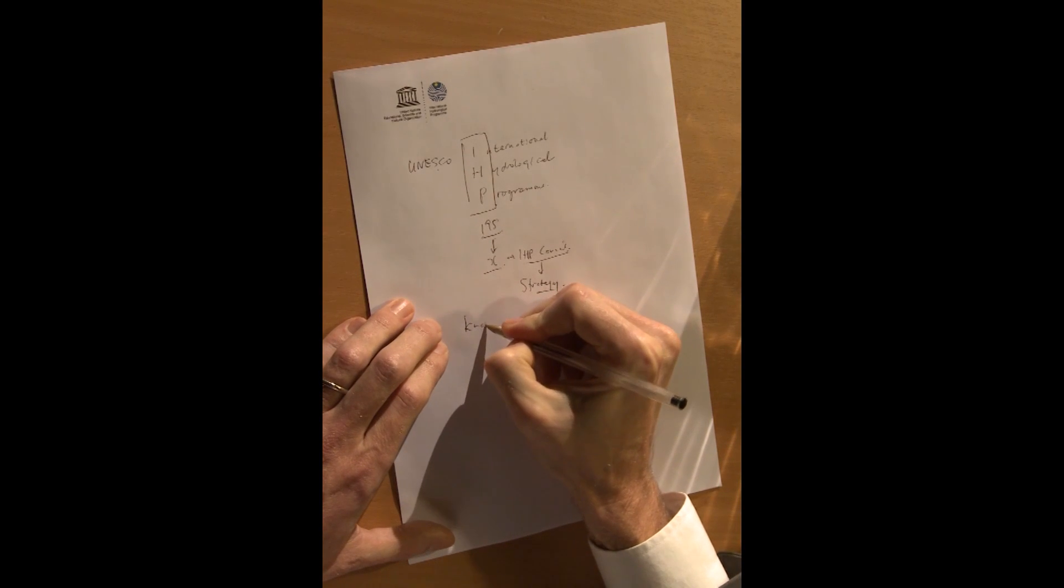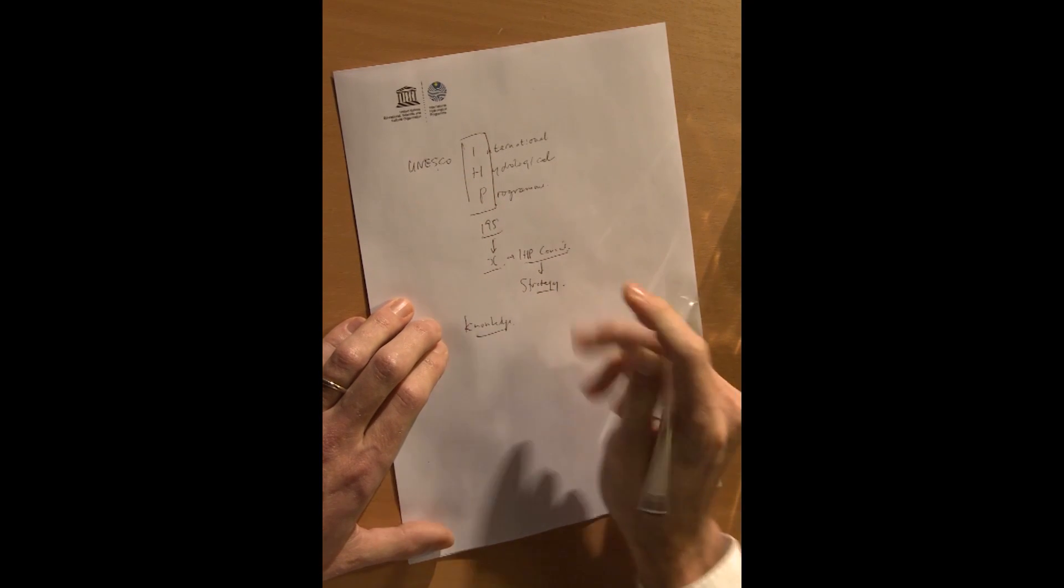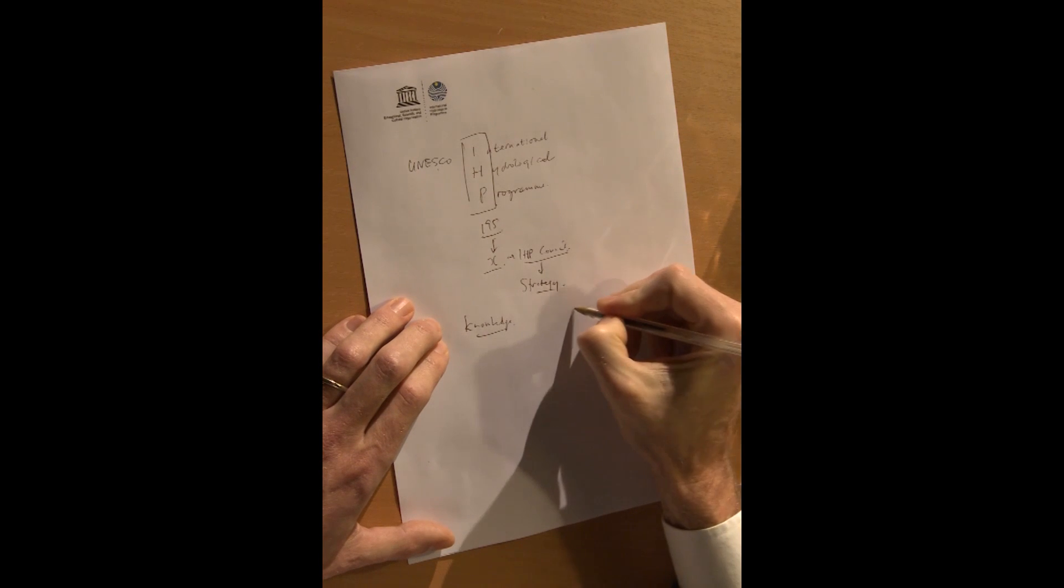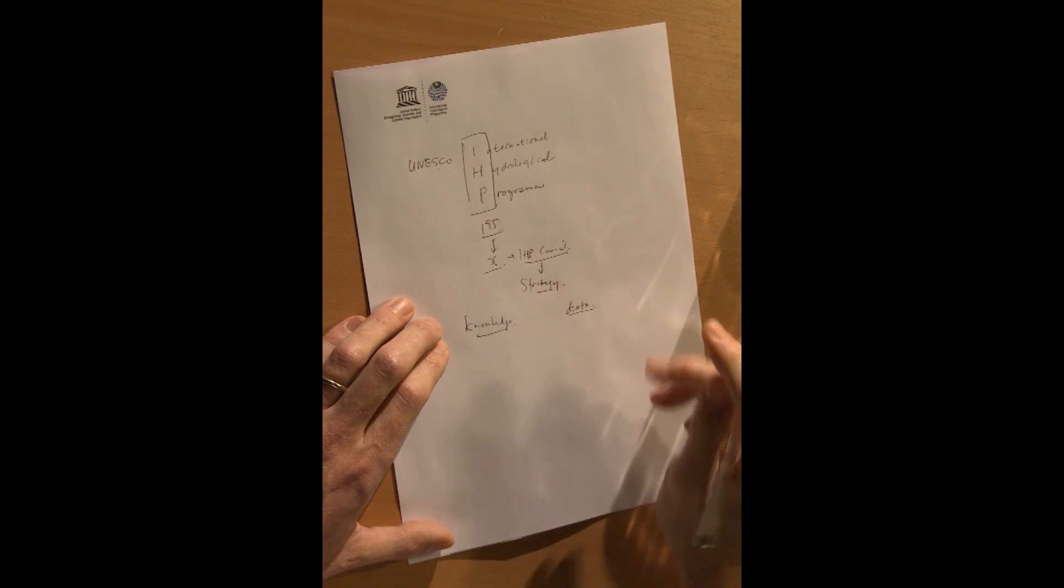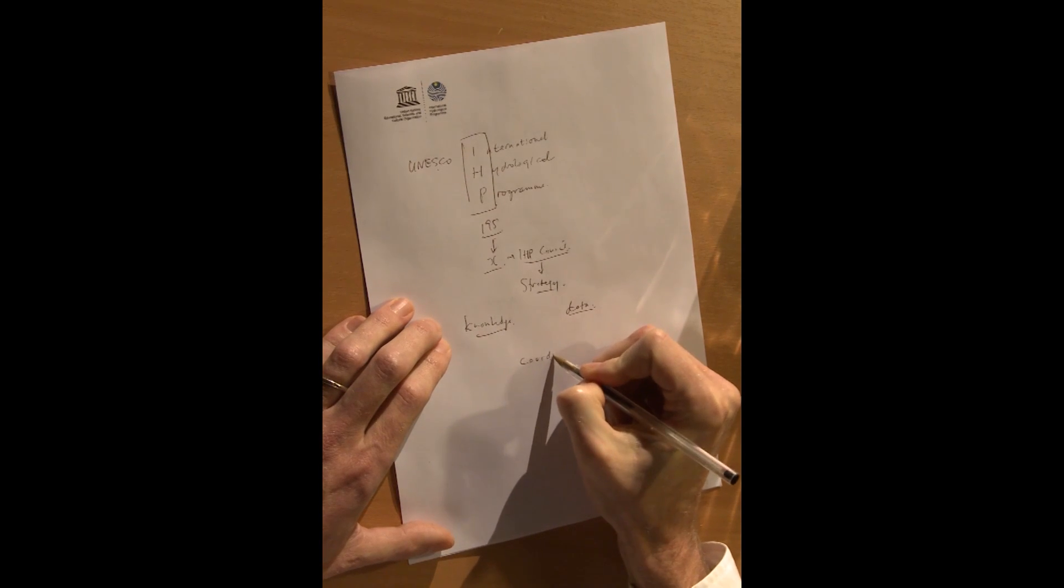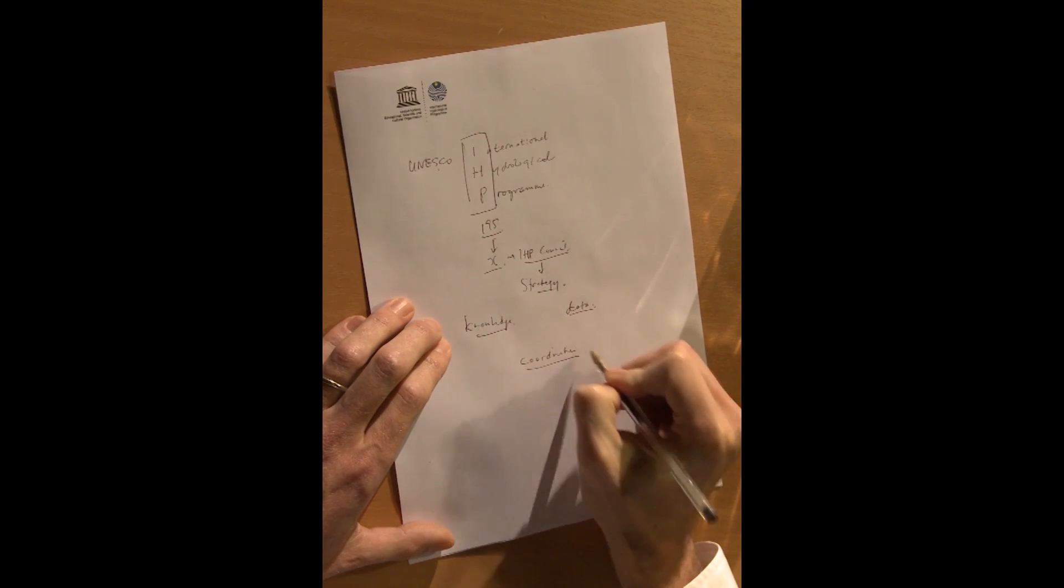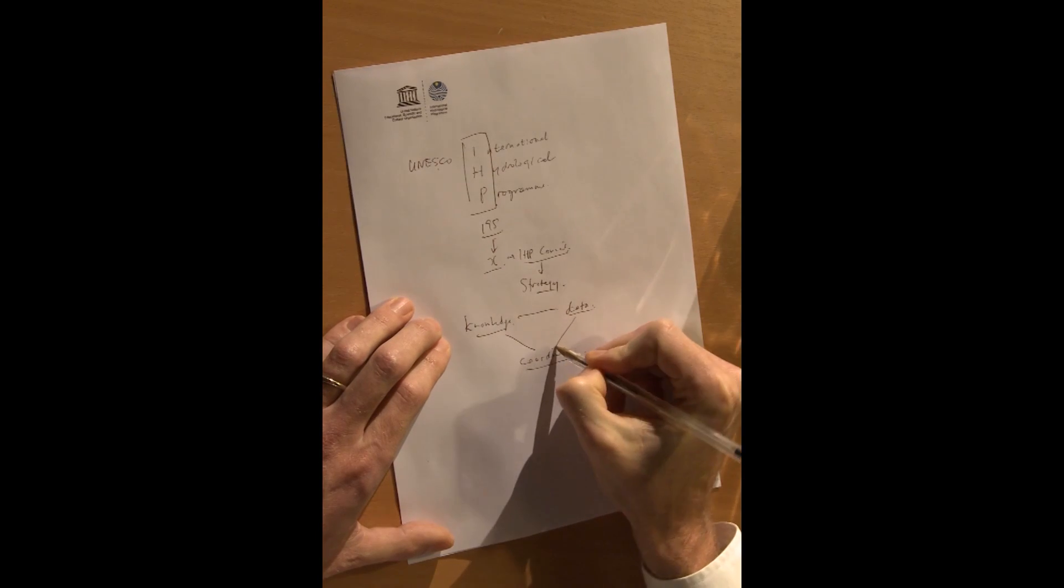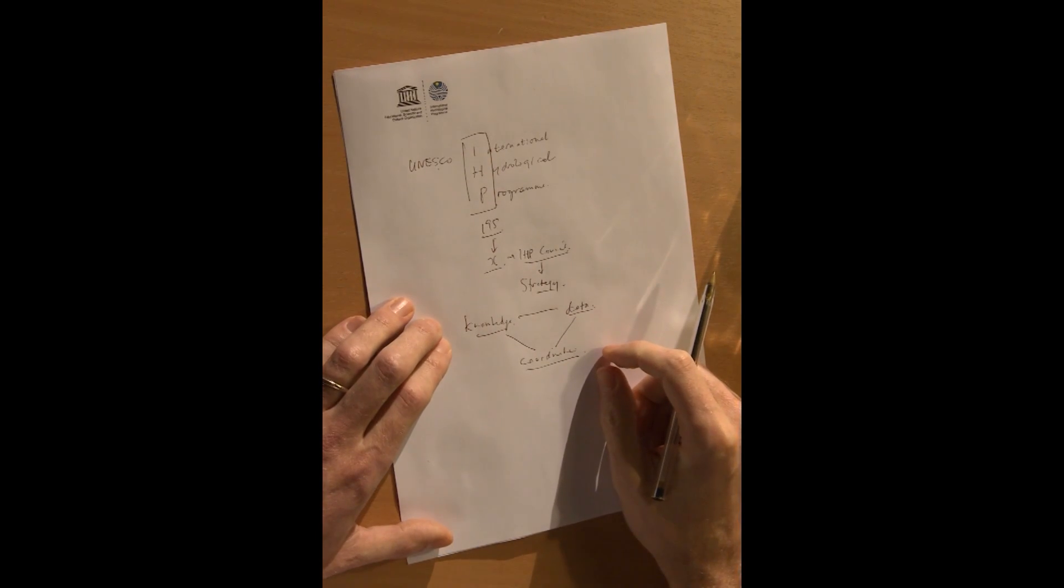First of all, they need knowledge to understand. They also need data to predict. And, of course, they need coordination. This is the triangle that IHP tries to bring about.